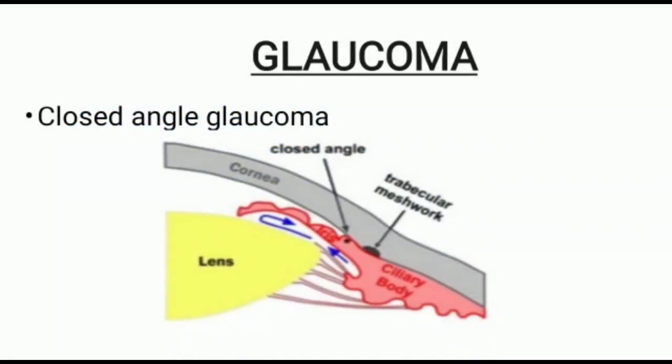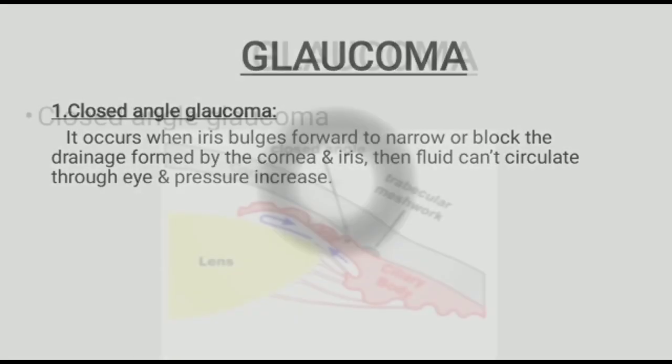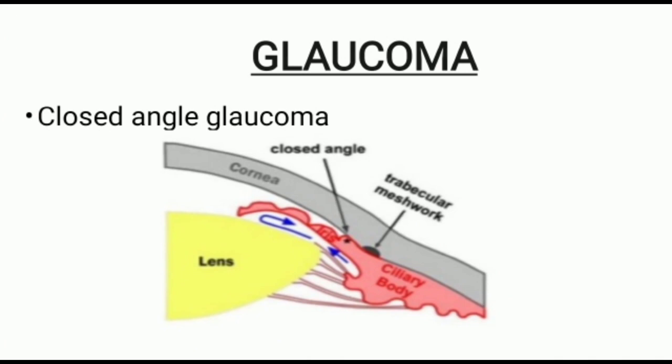First, we discuss close angle glaucoma. It occurs when the iris bulges forward to narrow or block the drainage formed by the cornea and iris, so fluid cannot circulate through the eye and pressure increases. In this condition, the space between the lens and cornea is decreased, the trabecular meshwork is widely open, and intraocular pressure is increased, producing close angle glaucoma.